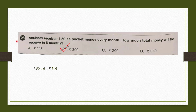Question number 28: Anupab receives Rs. 50 as pocket money every month. How much total money will he receive in 6 months? In 1 month he gets Rs. 50, so in 6 months he will get 50 times 6, which is Rs. 300. So our answer is option B.